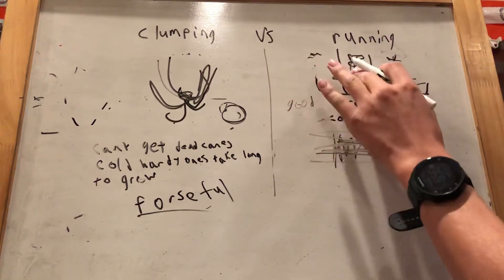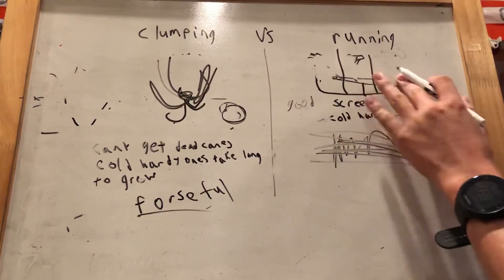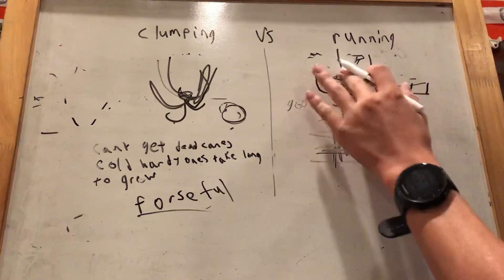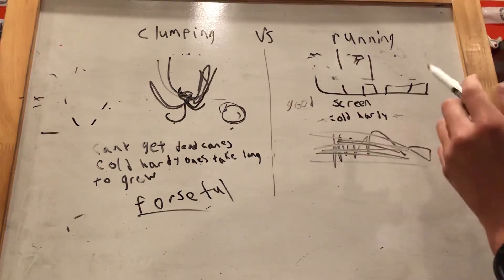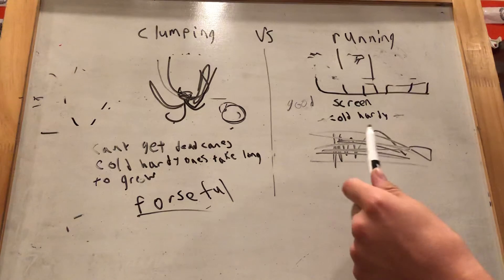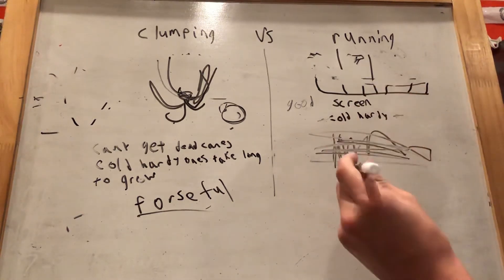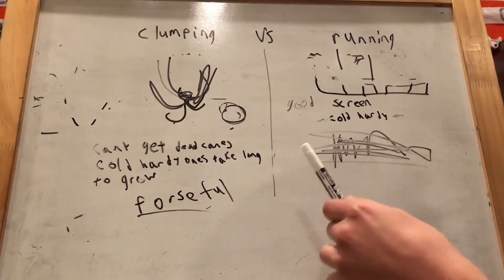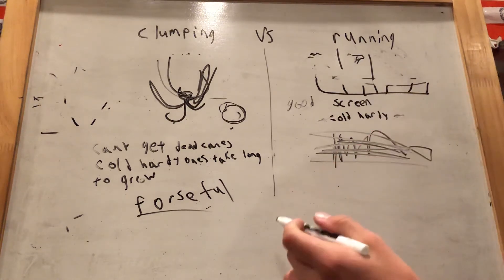That's kind of what happens with both of them. This is better for screening in my opinion, but clumping bamboo does have its pluses though.